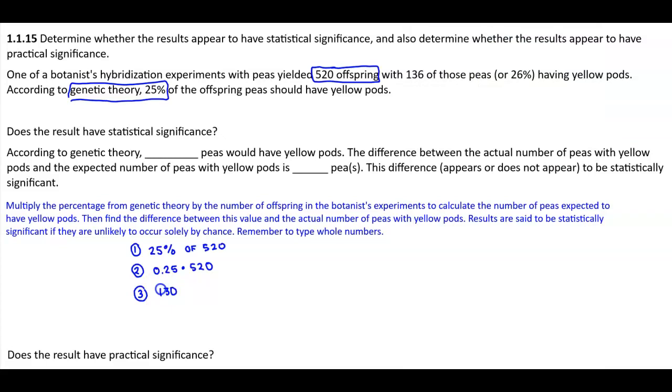So we would say, according to genetic theory, 130 peas would have yellow pods. Now, the difference between the actual number of peas with yellow pods and the expected number is the following. That means we're going to take the value here, which is 136, this is the actual number, and subtract 130 to get the value of 6. So we would say that with yellow pods is 6 peas. Therefore, we would say that this difference does not appear to be statistically significant.